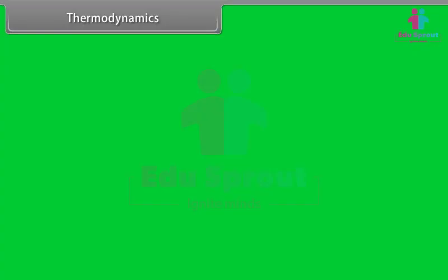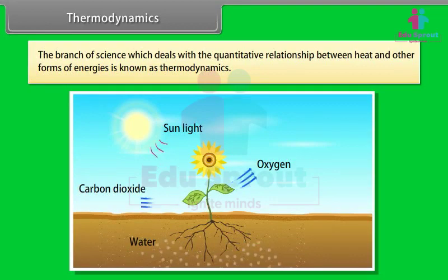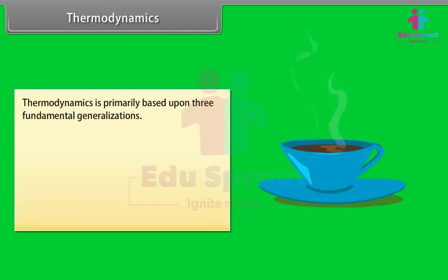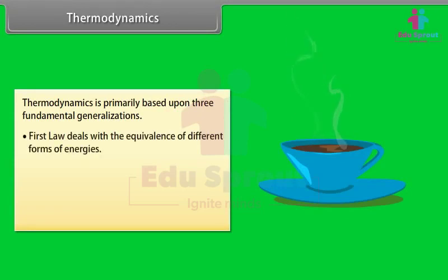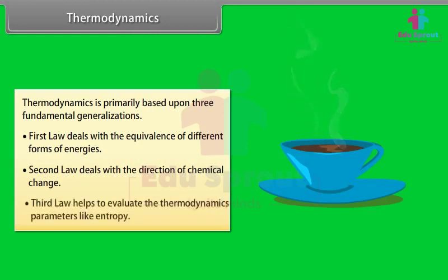Thermodynamics. The branch of science which deals with the quantitative relationship between heat and other forms of energies is known as thermodynamics. Thermodynamics is primarily based upon three fundamental generalizations: the first law deals with the equivalence of different forms of energies, the second law deals with the direction of chemical change, and the third law helps to evaluate thermodynamic parameters like entropy.